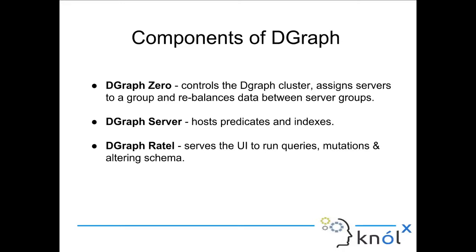Each server has information about what predicates are present on what DGraph server or what group they are in. So if there are five DGraph servers and I hit one that doesn't have my predicate, it won't randomly go to another server — instead it will directly forward my request to the correct DGraph server. We need to define predicates within a DGraph server — that is the part of schema.